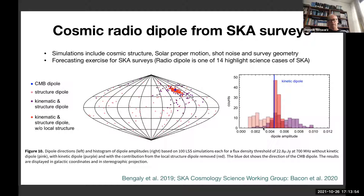But if you remove local sources up to a redshift of about 0.3–0.5, then you get the red dot distribution, providing a cleaner measurement.